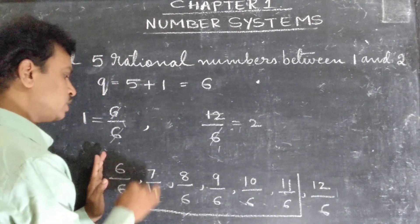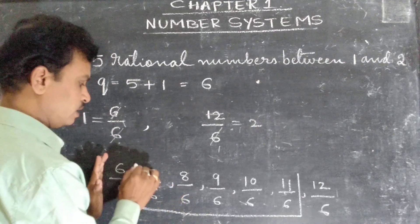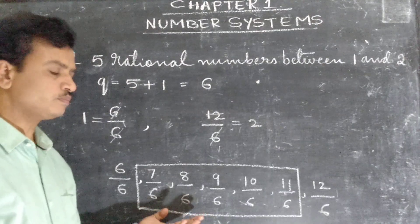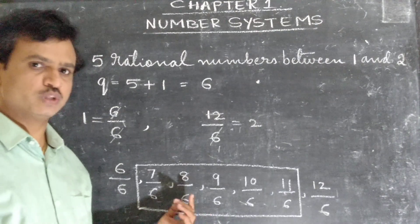Now all these are rational numbers in between 1 and 2. Understood this one?